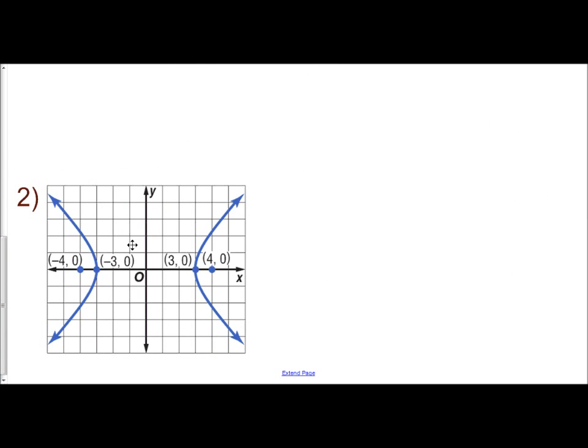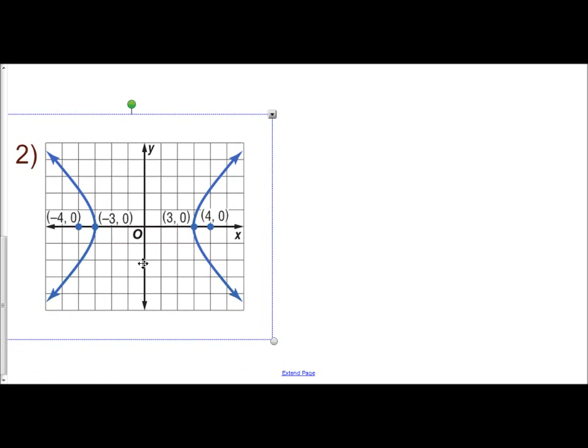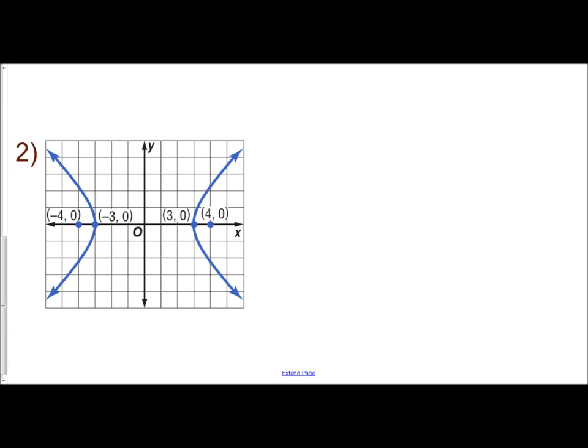Again, the first thing I'd want to do is identify am I working with a horizontal or a vertical hyperbola? And if you're given the graph, come on, it's easy. It's opening left and right. So that means you're dealing with a horizontal hyperbola. That allows me to know what my standard form should look like. The quantity x minus h squared over a squared minus the quantity y minus k squared over b squared equals 1.